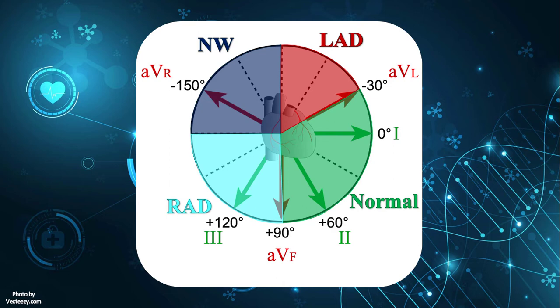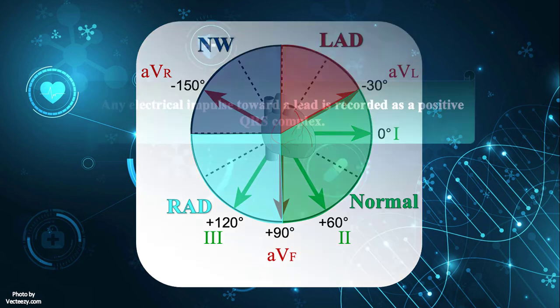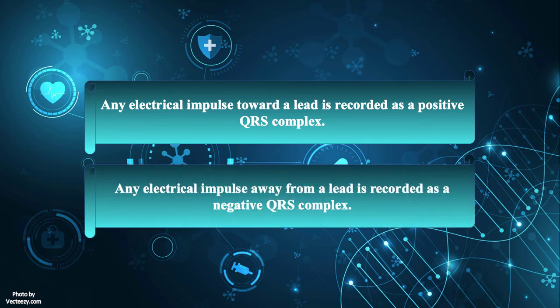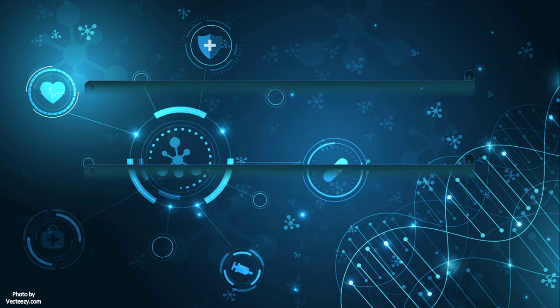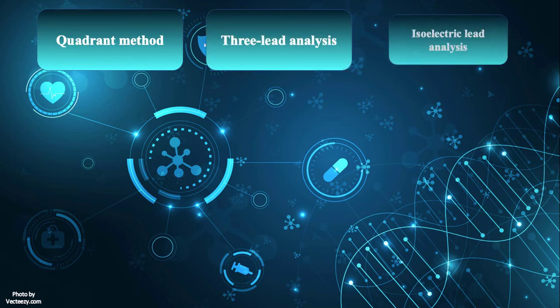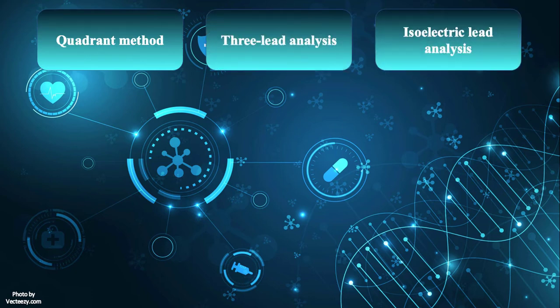It is re-emphasized that any electrical impulse toward a lead is recorded as a positive QRS complex, while any electrical impulse away from a lead is recorded as a negative QRS complex. There are different methods for calculating cardiac axis: the quadrant method, the three-lead analysis, and isoelectric lead analysis are the three main methods.